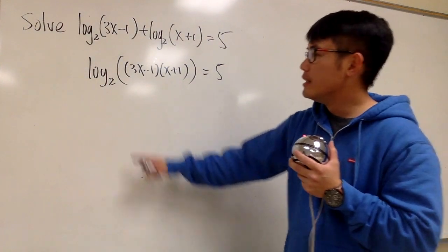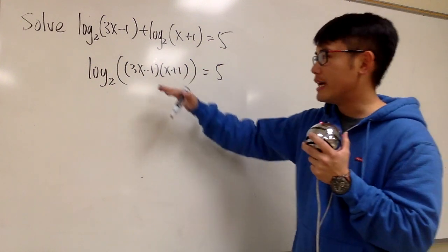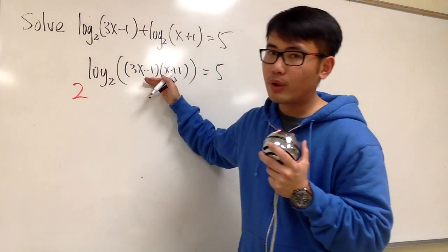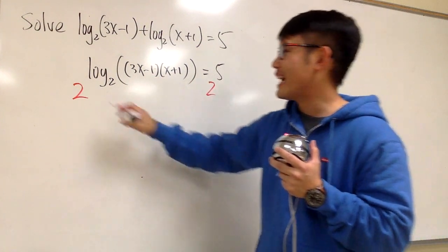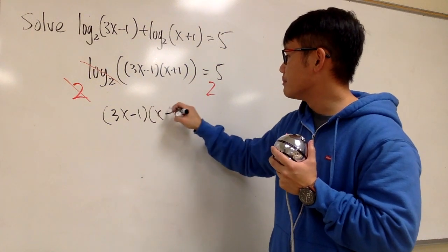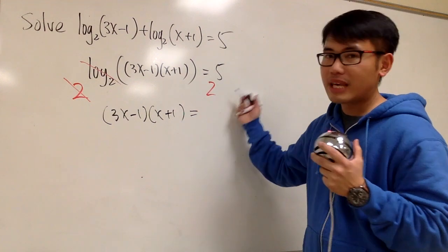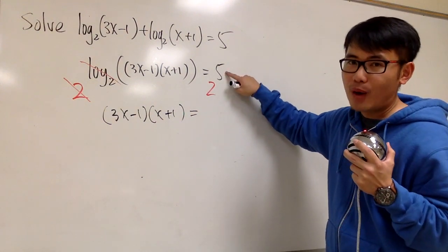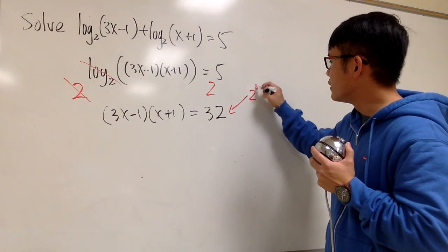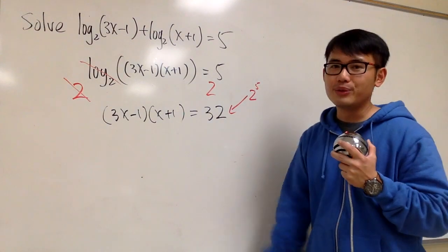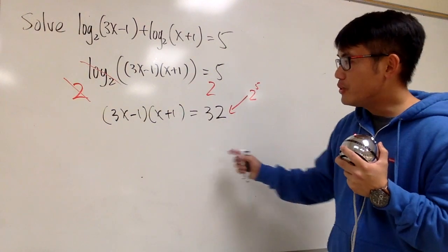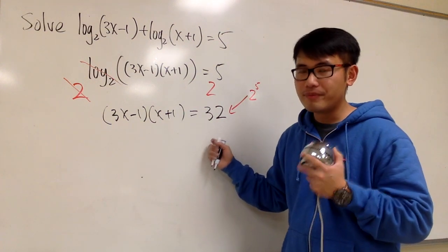I would like to get rid of the log first. This is log base 2 and x is inside, so I'm going to pretend both sides are the exponents with base 2. I do 2 to this power on both sides. The left-hand side is easy — the log and the base cancel — and we just have (3x minus 1) times (x plus 1). For the right-hand side, work this out carefully: 2 to the 5th power gives us 32, because 2 times 2 times 2 times 2 times 2 is 32. This is going to be a quadratic equation, so multiply it out first, make it equal to 0, then do the factoring.